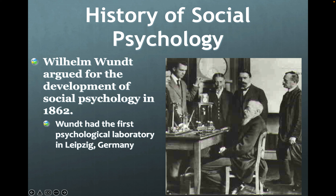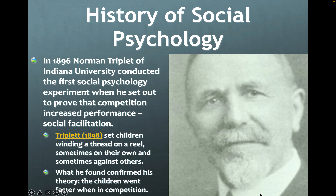Wilhelm Wundt argued for the development of social psychology back in 1862 and had the first psychological laboratory in Leipzig, Germany. In 1896, Norman Triplett of Indiana University conducted the first social psychology experiment to prove that competition increased performance — known as social facilitation. In 1898, he did an experiment where he set children winding thread on a reel, sometimes alone and sometimes against others, and confirmed that children went faster when in competition. In 1924, Floyd Allport published an influential text on social psychology.